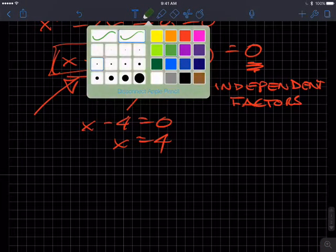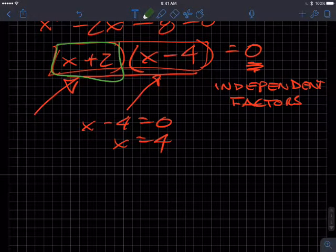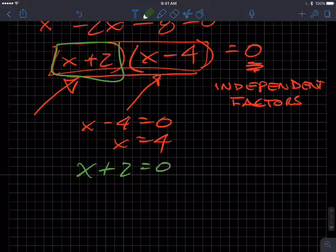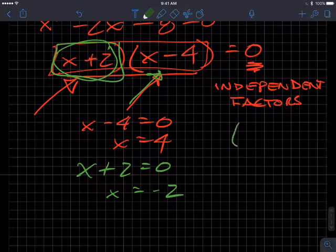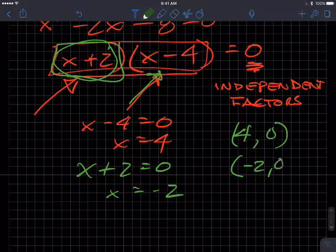So we can determine when that equals 0 by doing this. And then we can do it separately for this guy. When is that going to equal 0? Because if this equals 0, I don't care what happens to this. So then we get x equals negative 2. So those are our x-intercepts. Yes, there are two x-intercepts: 4, 0 and negative 2, 0.